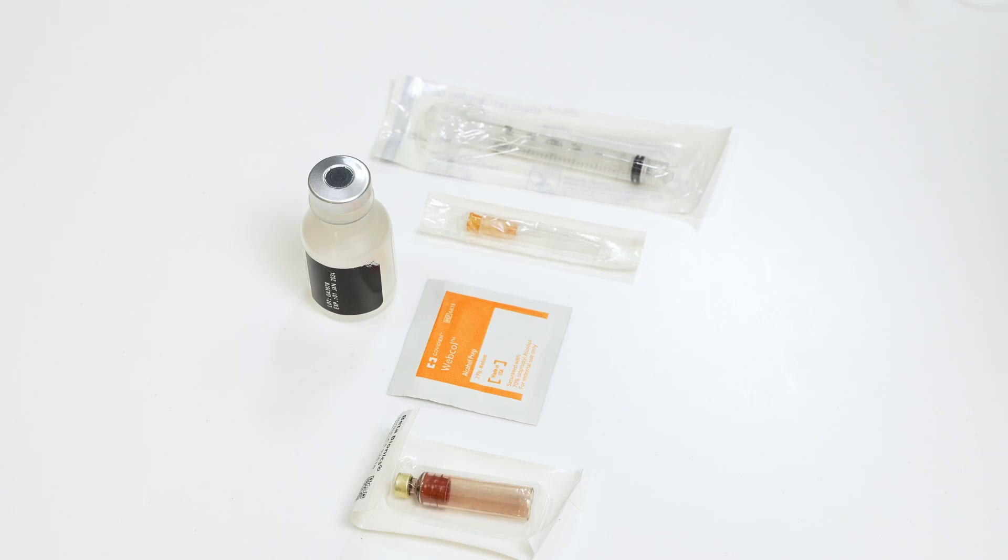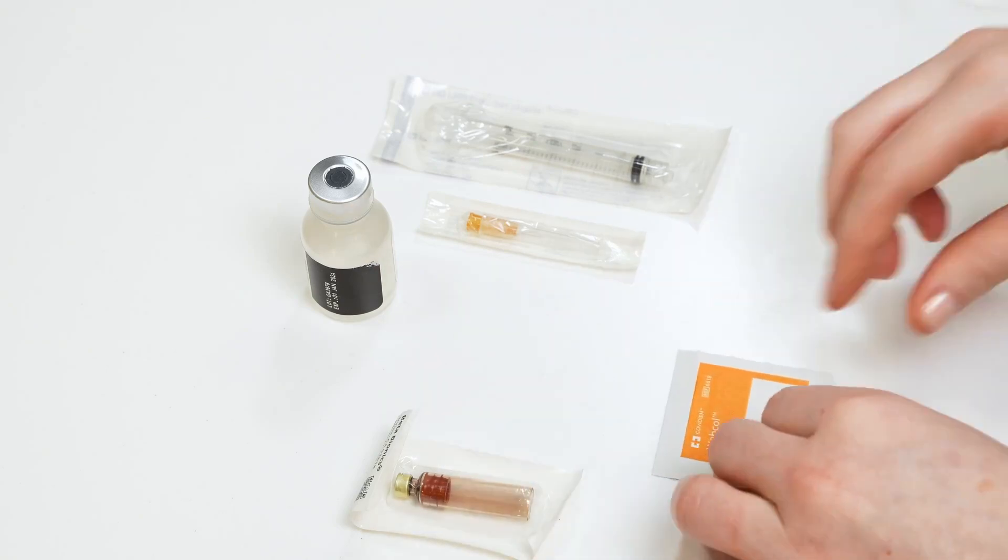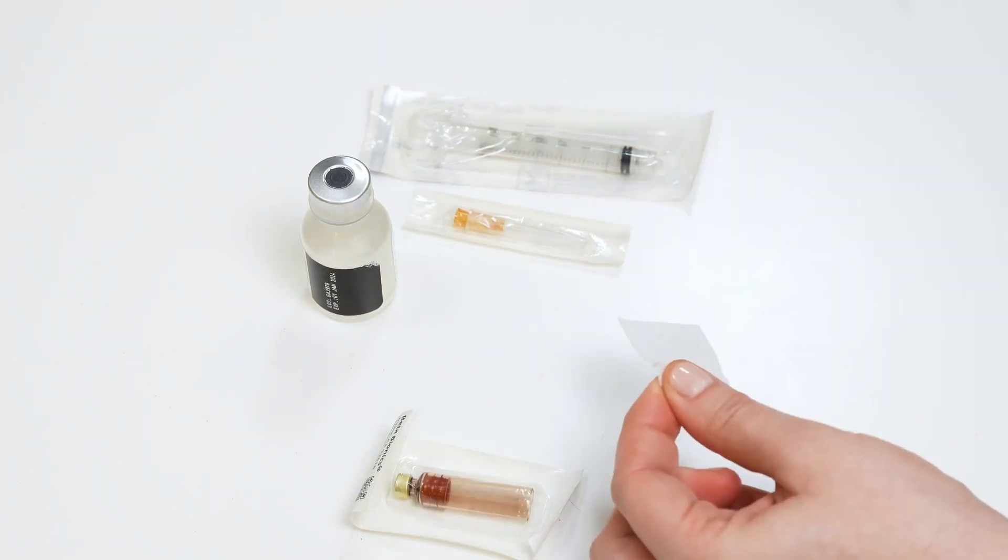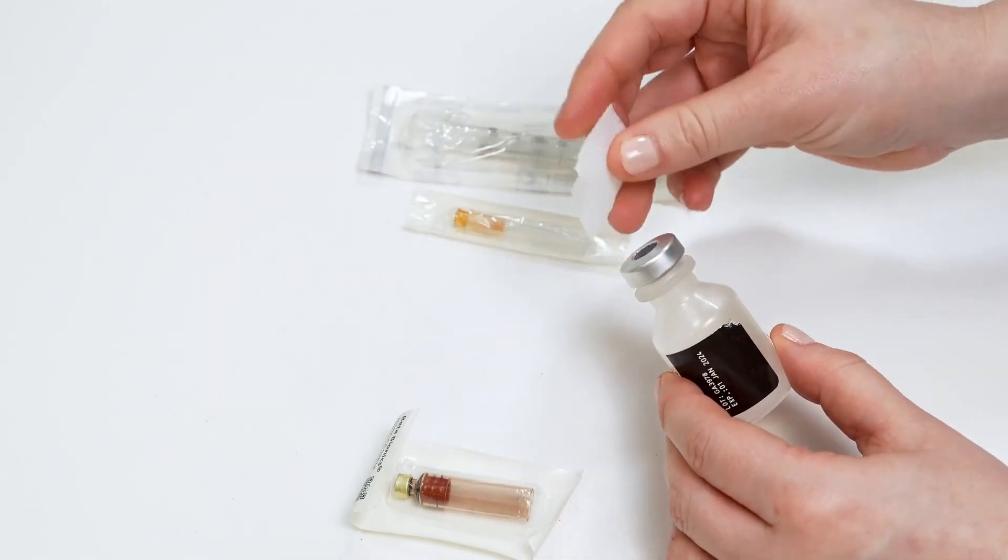Make sure you have the required supplies and a clean work surface to fill the islet cartridge with insulin. Gather the following supplies: an islet cartridge, a syringe and a needle, a vial of Humalog or Novolog insulin, and an alcohol swab.